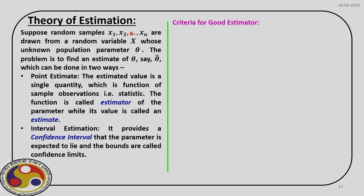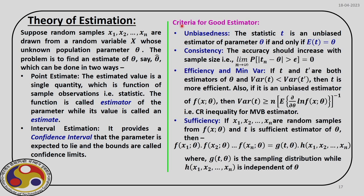Before we investigate how to find these population parameters theta, let us first see what are the criteria of a good estimate. It should actually satisfy four different features: the first one is unbiasedness, the second is consistency, the third is efficiency and minimum variance, and finally sufficiency. We will go through them one by one.